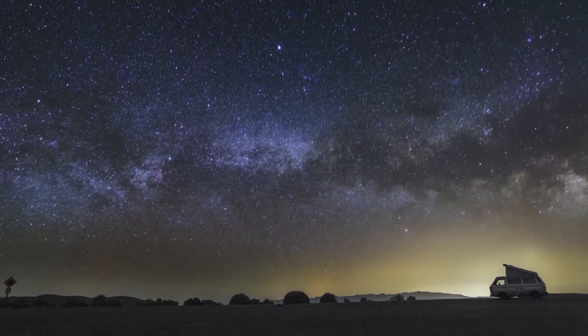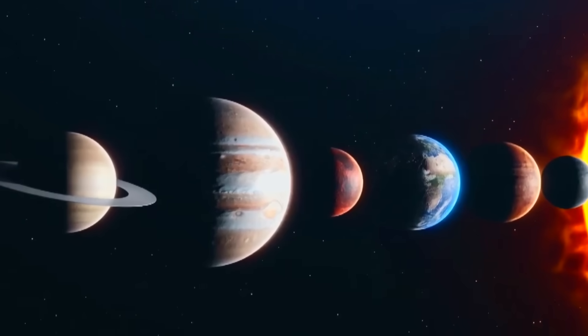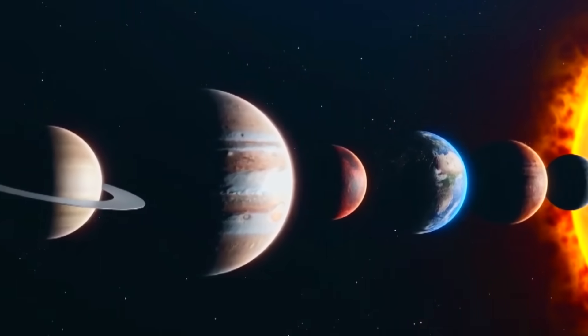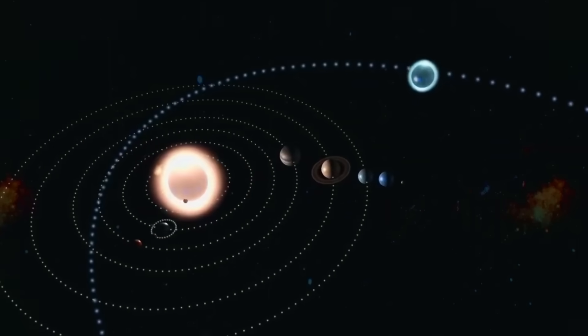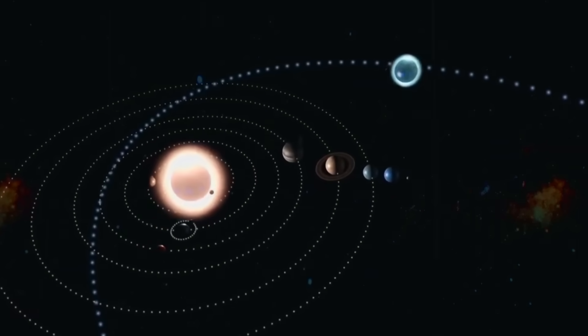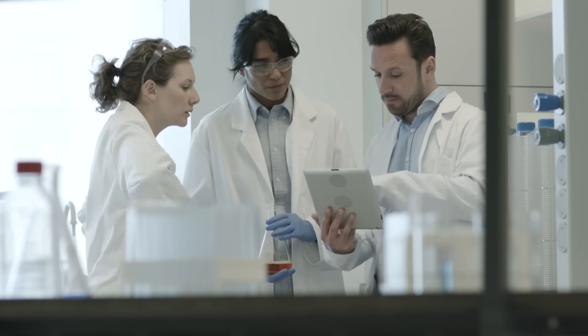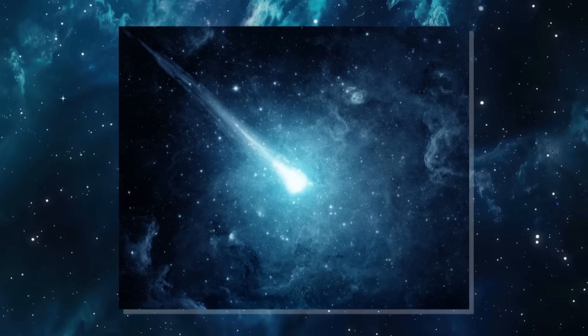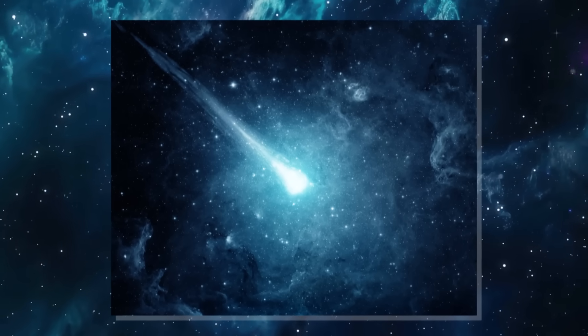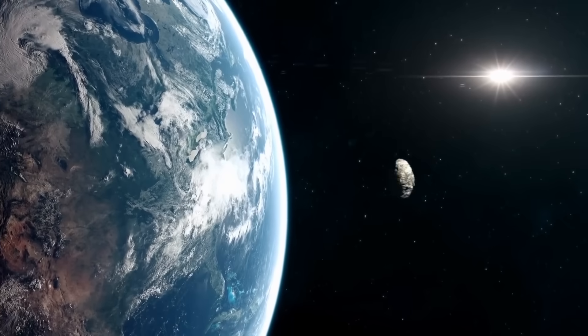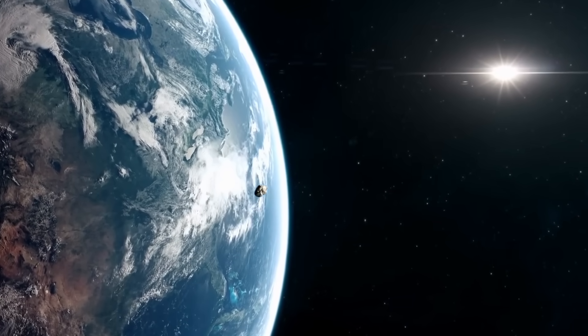This independence deepens the mystery. Two unrelated interstellar objects arriving in our solar system within months of each other, and both on course to meet the sun at nearly the same moment. For many in the scientific community, this coincidence strains belief. Could two such wanderers really appear back to back after eons of silence? Or are we witnessing something coordinated, some cosmic event larger than we understand?